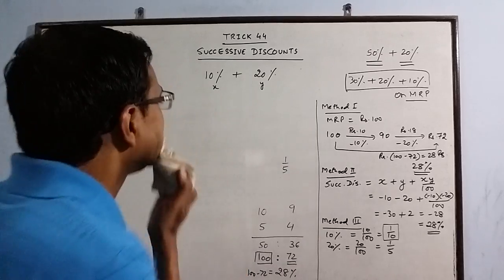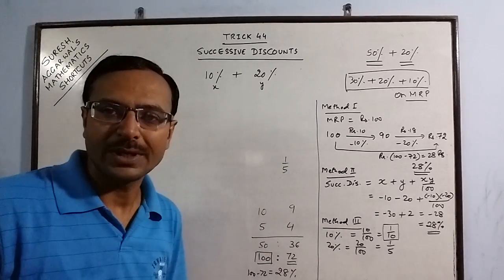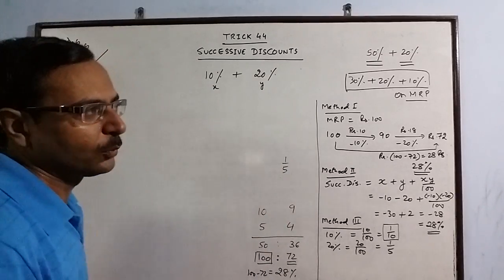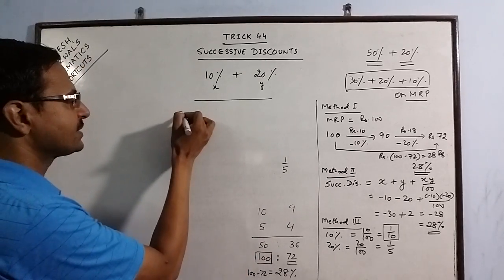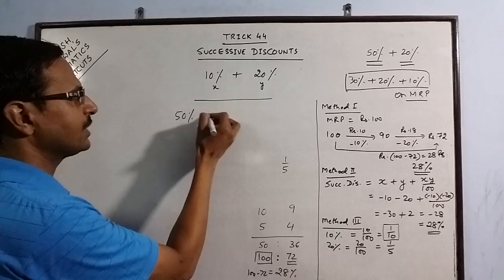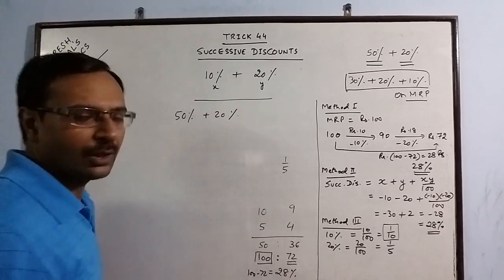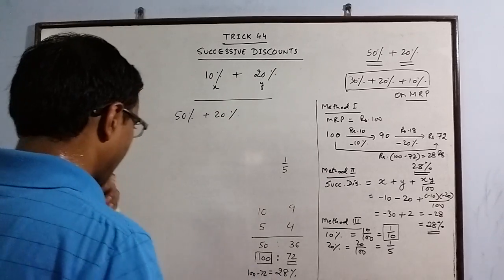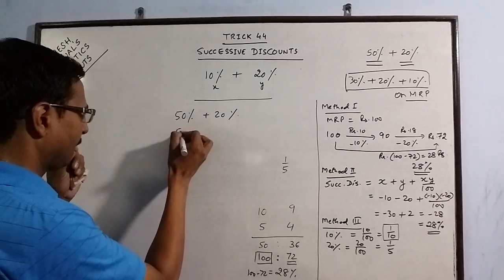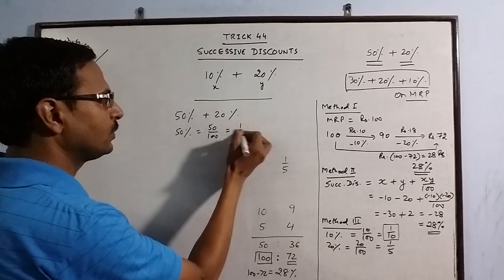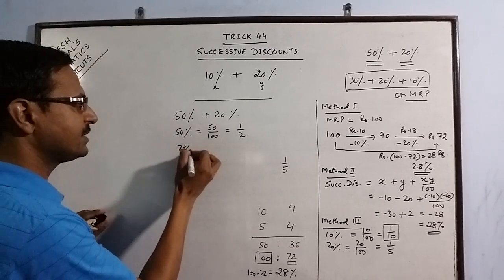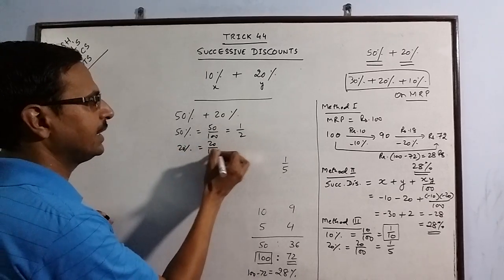Now let me illustrate this using one more formula, one more method. Say we have a discount of 50%, 50% plus 20%. Now this trick: 50% means 50 upon 100, that is 1 by 2. 20% means 20 upon 100, that is 1 by 5.